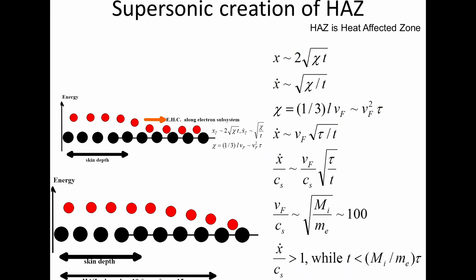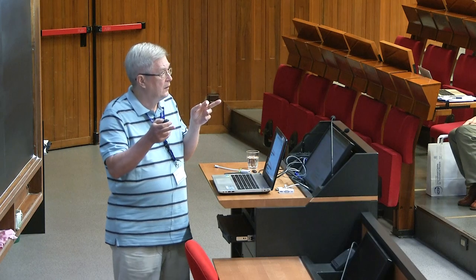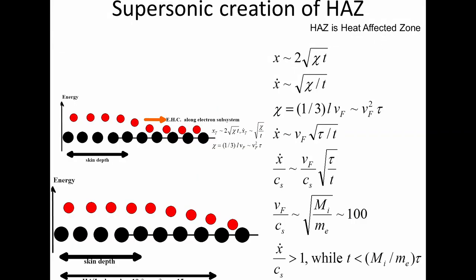And it creates some so-called heat affected zone near the surface. It also has nanoscale thickness, but typically it is something like 5 to 10 times more thick than the skin layer. Skin layer 10 nanometers, and the heat affected zone something like 100 nanometers.